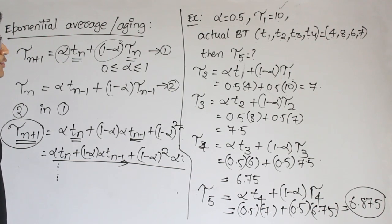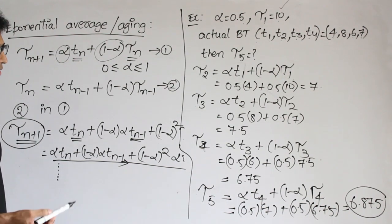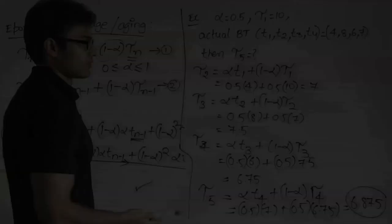Practically, we don't use exponential averaging much. The most practical scheduling algorithm is Round Robin, which we shall see next.